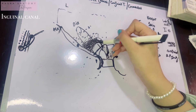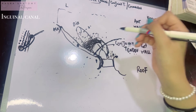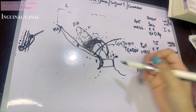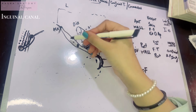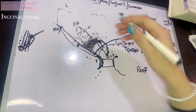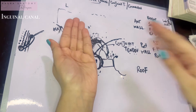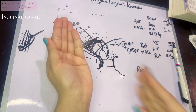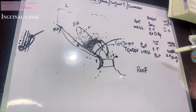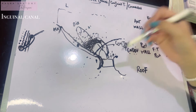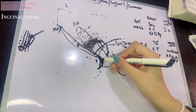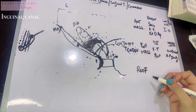The roof of the inguinal canal is formed by the arching fibers of the internal oblique and transversus abdominis. The floor of the inguinal canal is formed by the grooved upper surface of the inguinal ligament, which is grooved to accommodate the inguinal canal. Medially, the lacunar ligament is also responsible for forming the floor.